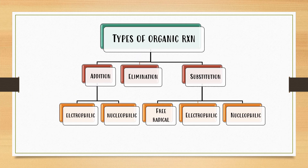Now let's look at the types of organic reactions. There are three main types: addition, elimination, and substitution. For addition reactions, we can divide them into electrophilic and nucleophilic addition. For substitution reactions, there are three subtypes: free radical substitution, electrophilic substitution, and nucleophilic substitution — depending on what species is involved as the intermediate.